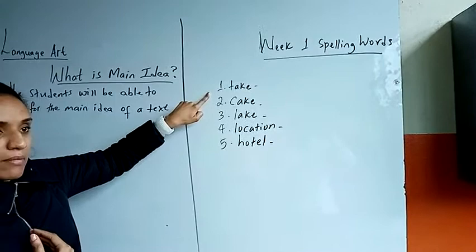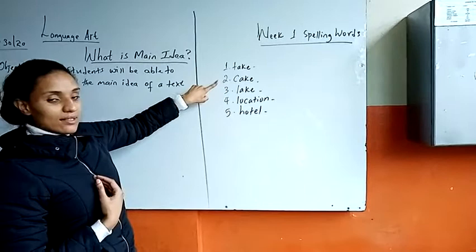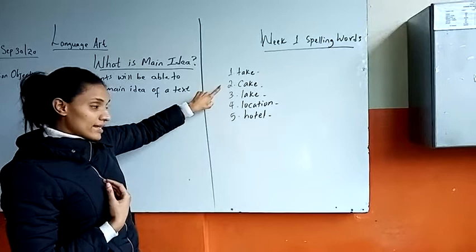The next spelling word is 'cake.' I'm sure you know this one. For example: I ate cake, or you can say: yesterday I ate cake.